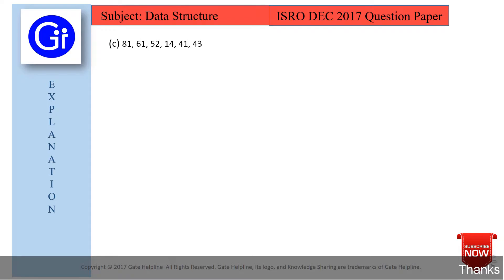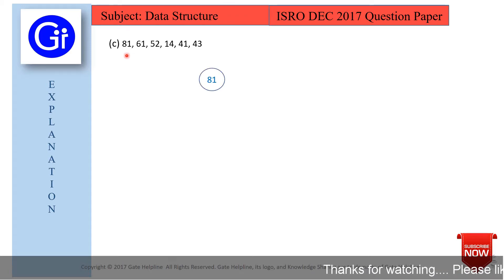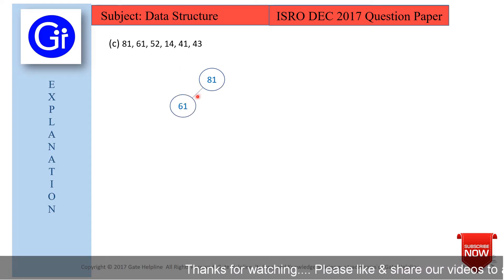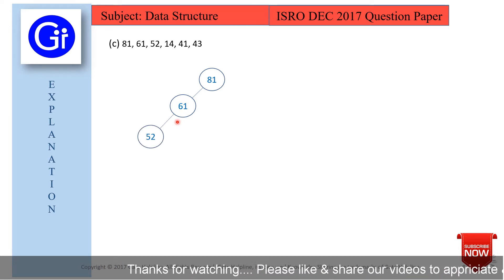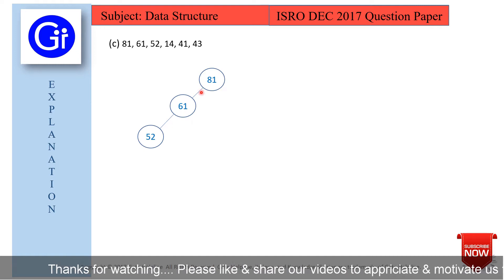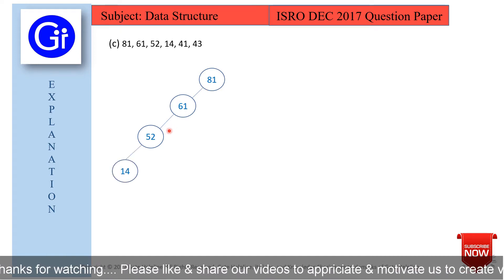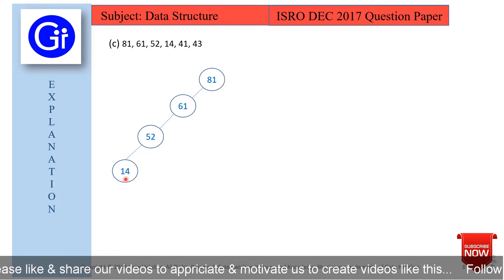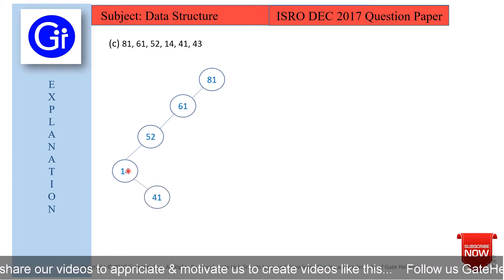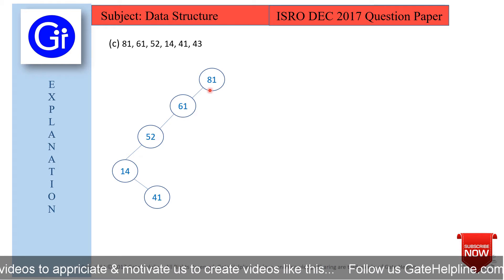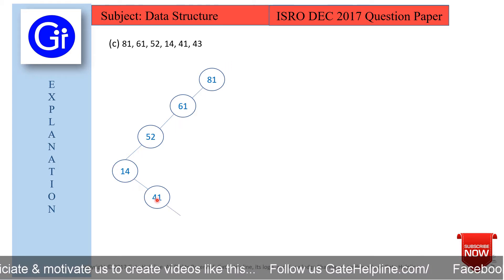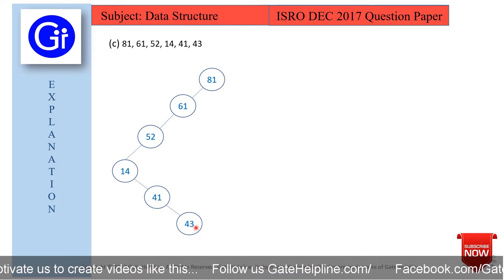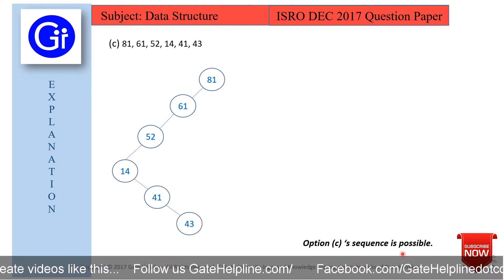Now we will see option C. Option C's inputs are 81, 61, 52, 14, 41, 43. We start with 81. Then 61 is less than 81, so it goes on the left. Then 52 is less than both, so it goes on the left of 61. Then 14 is less than all three nodes, so it goes on the left again. Then 41 is less than 52 but greater than 14, so it goes on the right of 14. Then 43 is less than 81, 61, 52 but greater than 14 and 41, so it comes on the right of 41. Option C sequence is also possible.